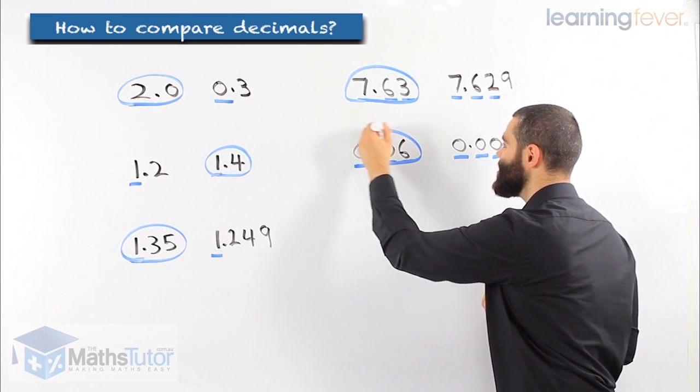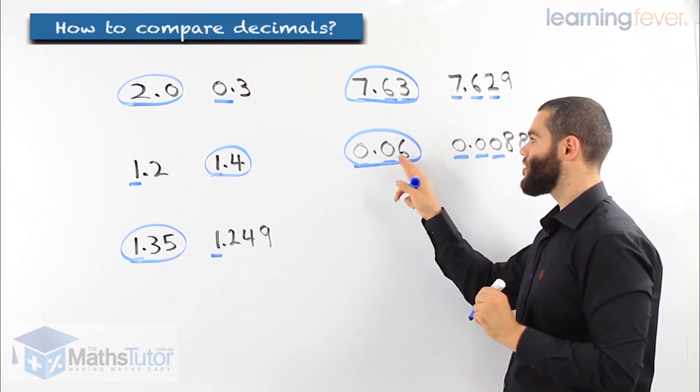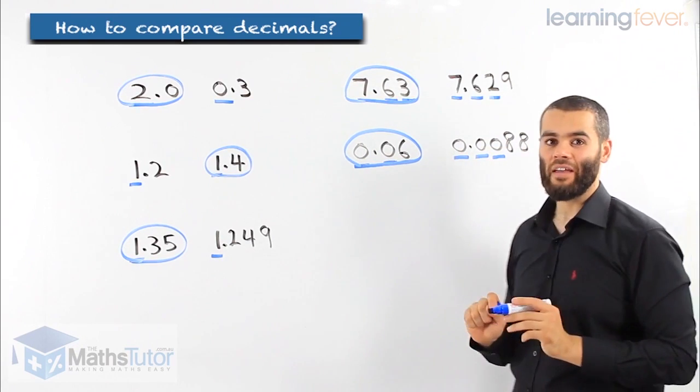Therefore, this is larger than that number there. 0.06 is larger than 0.0088.